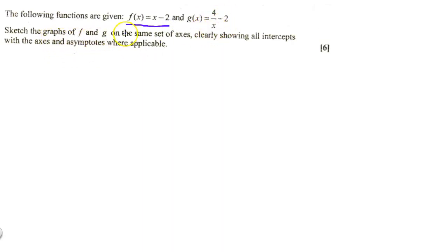It says sketch the graph of F and G on the same set of axes, clearly showing all the intercepts with the axes and asymptotes where applicable. The first thing that we want to look at is let us sketch this particular graph, which is the straight line graph.